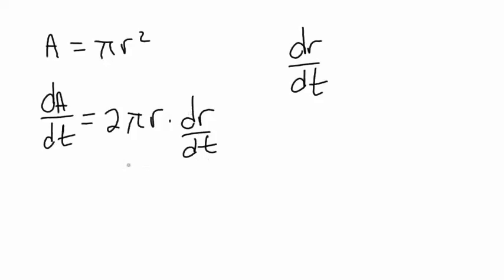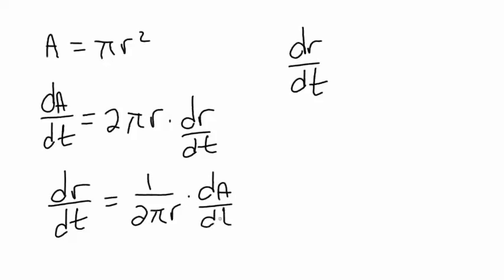But anyway, we're finding dr/dt, so we've got to solve for this. I'm going to put the dr/dt on this side and bring the 2 pi r diagonally down. So we end up with 1 over 2 pi r times dA/dt.